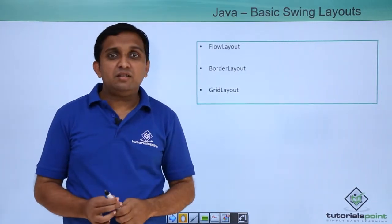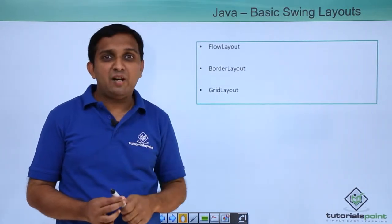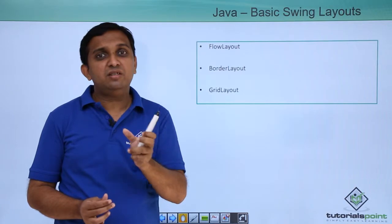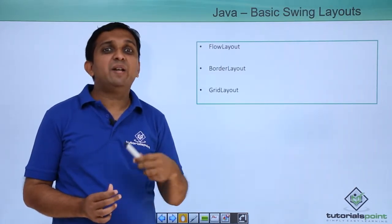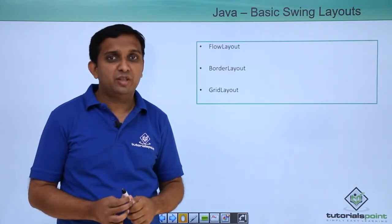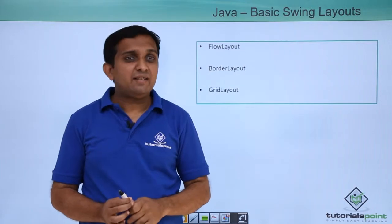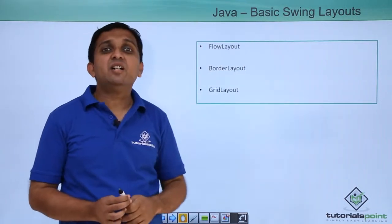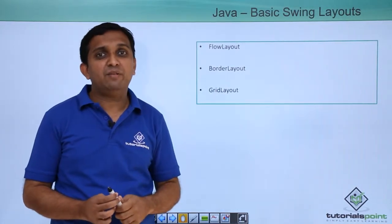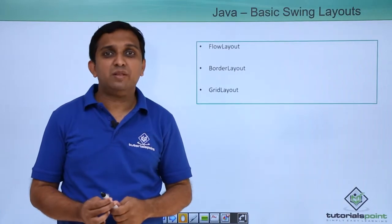In Border Layout, the UI is divided into five different parts: Center, North, South, East, and West. You mention on which part you want to place your component — that is done in Border Layout. In Grid Layout, the UI is divided into rows and columns. When you add a component, you mention the row number and column number.